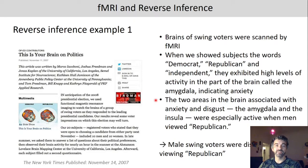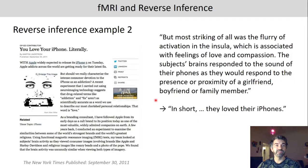So does this really indicate that swing voters were disgusted when they saw the word 'republican'? Here's another example. Most striking of all was the flurry of activation in the insula, which is associated with feelings of love and compassion. The subjects' brains responded to the sound of their phones as they would respond to the presence of a girlfriend, boyfriend, or family member. In short, they love their iPhones.